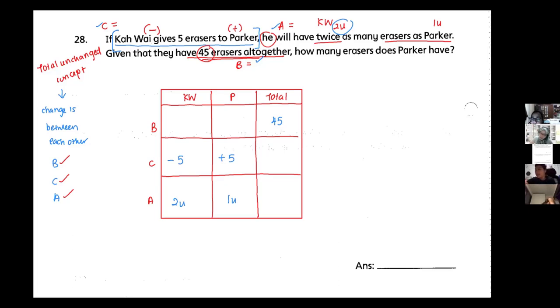The total before and after will be the same. Now if you know what's the meaning of total, total means plus, right? If I look at my before, nothing to add because I'm already given the total. 45 is the total of Kawai and Paka. Now my information to add is my after row.